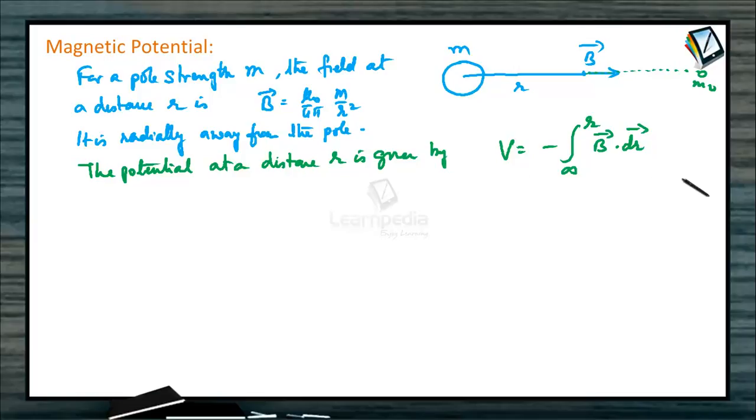Work done against this magnetic field B dot dr vector. Potential is a scalar quantity, is a dot vector of two vectors.